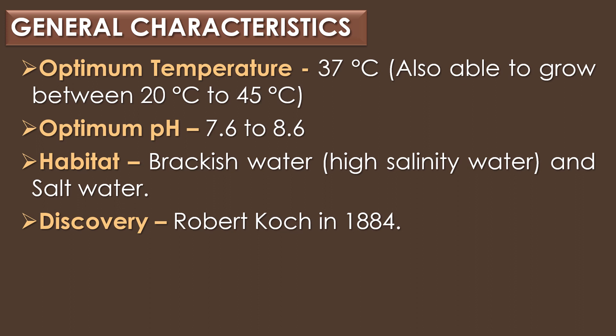The optimum pH is 7.6 to 8.6. Regarding the habitat, Vibrio cholerae is widely present in brackish water, that is high salinity water, and salt water. Vibrio cholerae was discovered by Robert Koch in 1884.